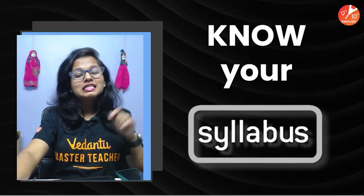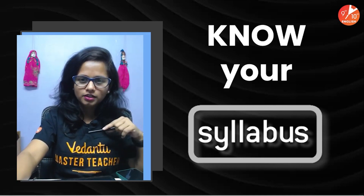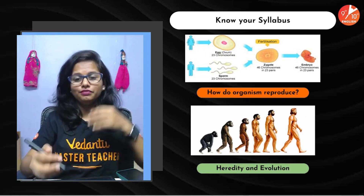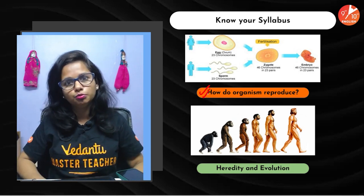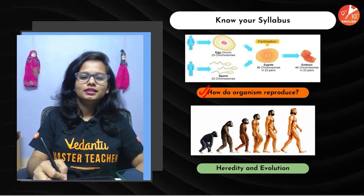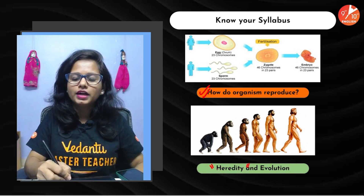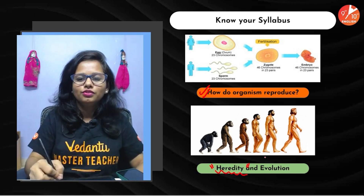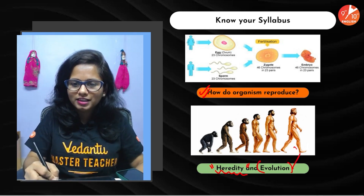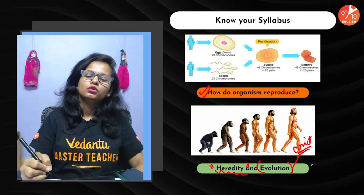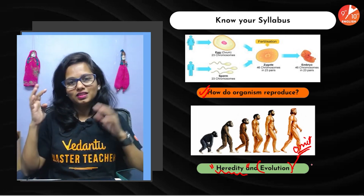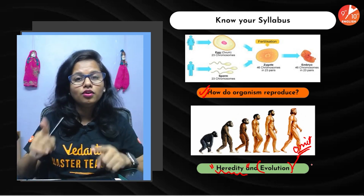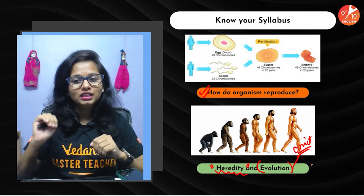When we talk about biology, start by knowing your syllabus. For Term 2, we have three chapters: the first is 'How Do Organisms Reproduce,' a major chapter. Then we have heredity — only the heredity part from the chapter 'Heredity and Evolution' is included. The evolution part has been omitted.